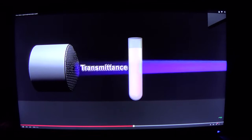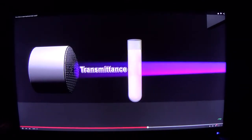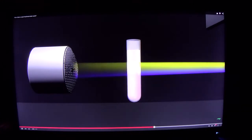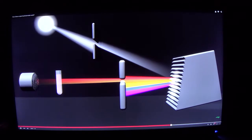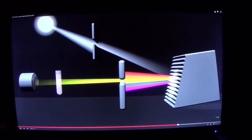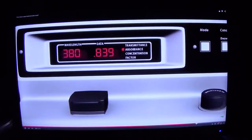Transmittance refers to the amount of light that passes completely through the sample and strikes the detector. Absorbance is a measurement of light that is absorbed by the sample. The detector senses the light being transmitted through the sample and converts this information into a digital display.